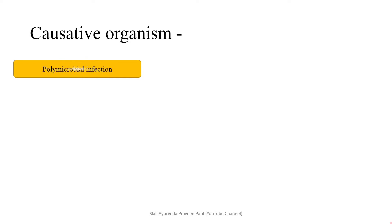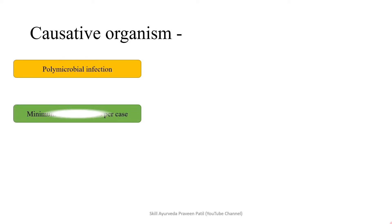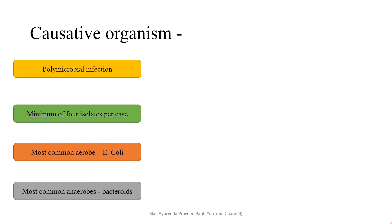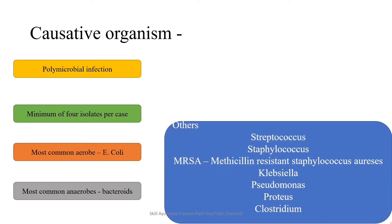Causative organisms: this is a polymicrobial infection requiring a minimum of four isolates per case. The most common aerobe is E. coli, and the most common anaerobe is Bacteroides — this is an important point for exams. Other organisms include Streptococcus, Staphylococcus, MRSA (methicillin-resistant Staphylococcus aureus), Klebsiella, Pseudomonas, Proteus, and Clostridium. These are the various organisms which may lead to Fournier's gangrene.